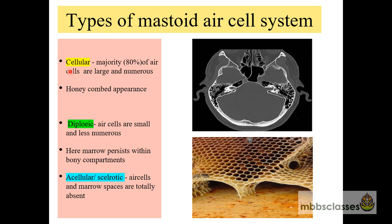What are the different types of mastoids? There are three different types: the first is the cellular mastoid, next is the diploic, and last is the acellular. In the cellular mastoid, the majority of the ear cells are large and numerous, with a honeycomb appearance as seen on X-ray. In the diploic type, the ear cells are small and less numerous; the marrow present at birth in the bony compartments persists and is not replaced by air.